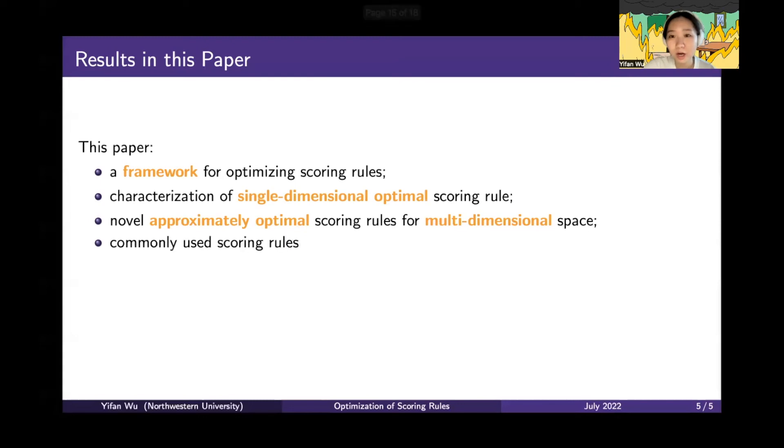We compare some commonly used scoring rules to the optimal and show they are far from optimal. For example, for single-dimensional scoring rules, we compare the quadratic scoring rule. And for multi-dimensional problems, we compare the separate scoring rule.